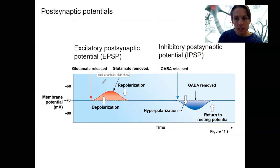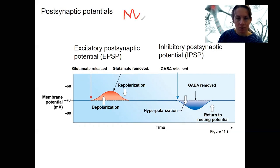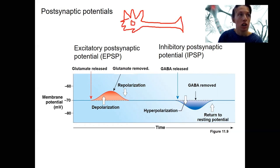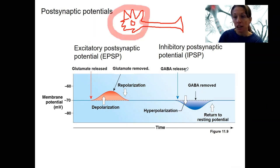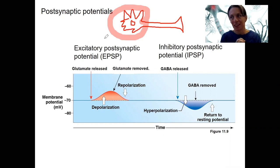Notice none of these are action potentials — it's just changes in membrane potential. Where does this happen? This happens at either the dendrites or cell body. This does not happen at the axon, ever. Changes in membrane potential at the axon are action potentials. Graded potentials are postsynaptic potentials. The graded potentials can be hyperpolarizing or depolarizing, depending on what kind of channel is open.